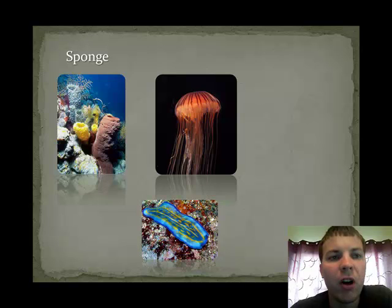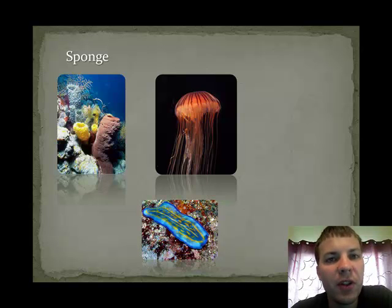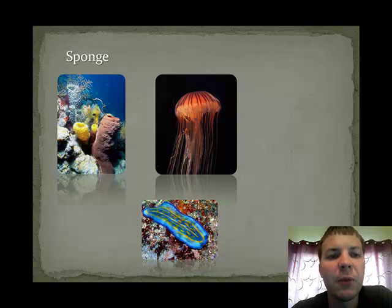The first group, and arguably one of the most simple, are the sponges. Believe it or not, sponges are classified as animals, although they do have some plant-like characteristics.